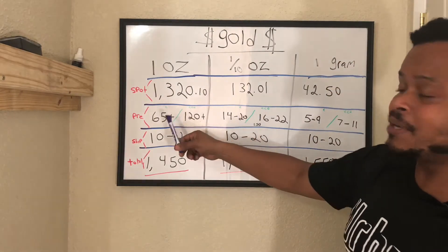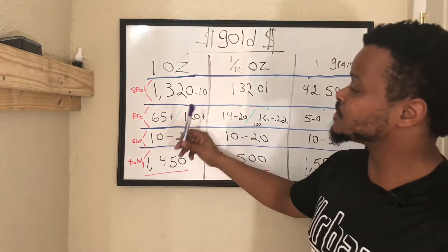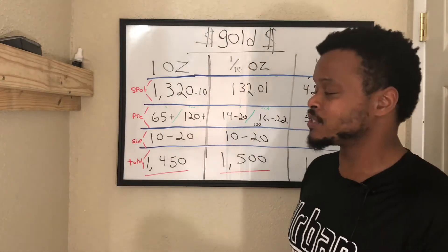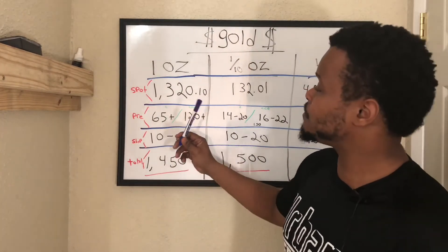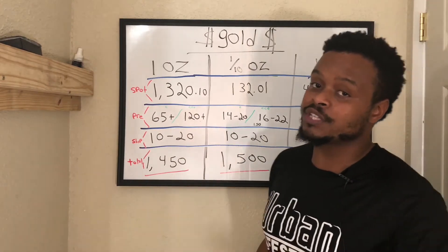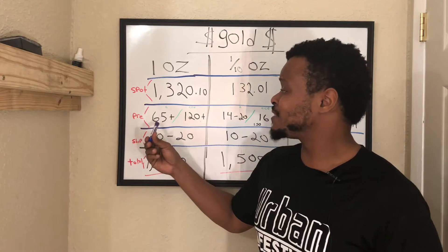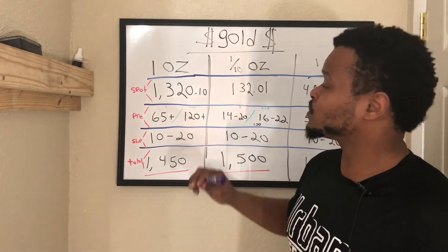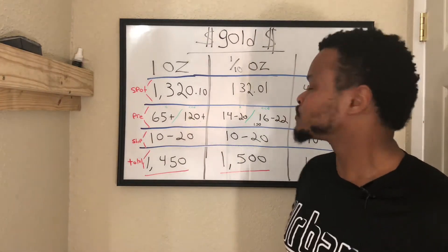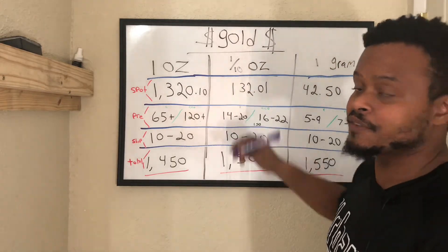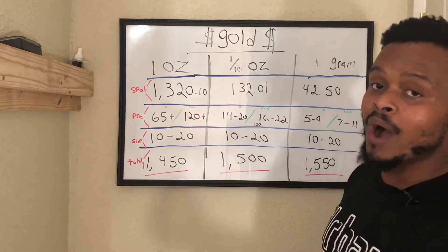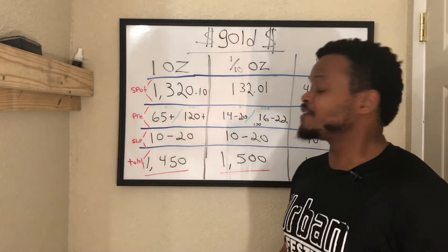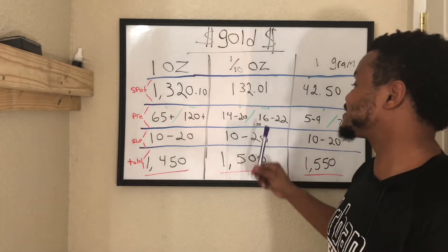There are two sets of numbers here because some companies — if you pay by check, wire, or even Bitcoin — for one ounce of gold you would actually pay $65 extra for the premium. Now if you're paying by card or PayPal, they'll charge between $120 and up. Going back to the one tenth of an ounce: if you pay by wire, check, or Bitcoin, they'll charge between $14 to $20. If you're paying by card, they'll charge $16 to $22.